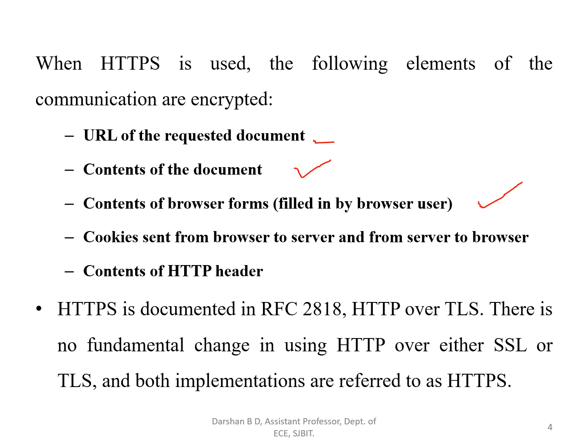The content of browser forms filled in by the user is also encrypted. For example, when logging into Gmail using a browser like Internet Explorer, the credentials and form content you fill in are encrypted. Cookies sent from browser to server and from server to browser are all encrypted. The content of the HTTP header is also encrypted. These are the advantages of HTTPS, which is the combination of HTTP and Secure Socket Layer.